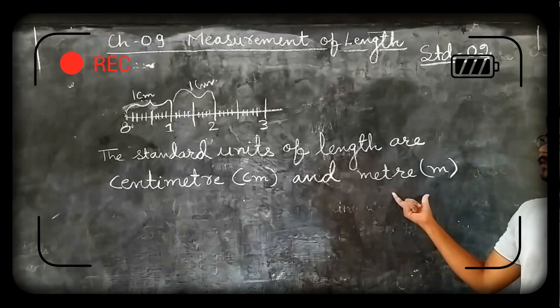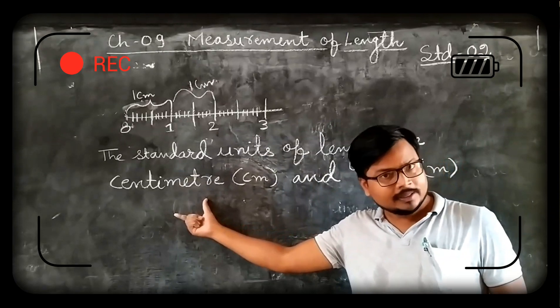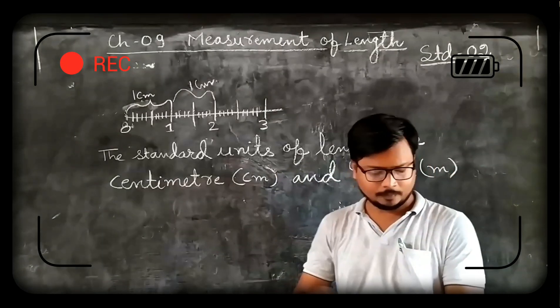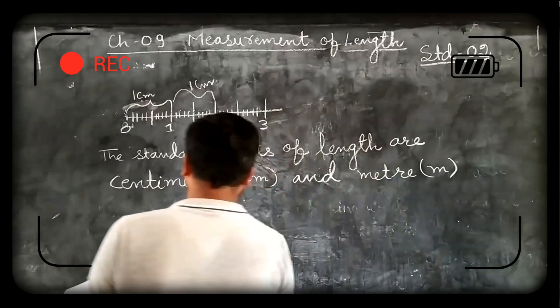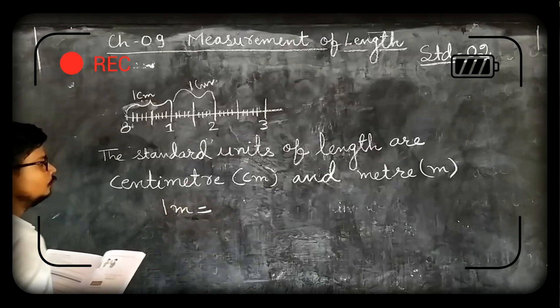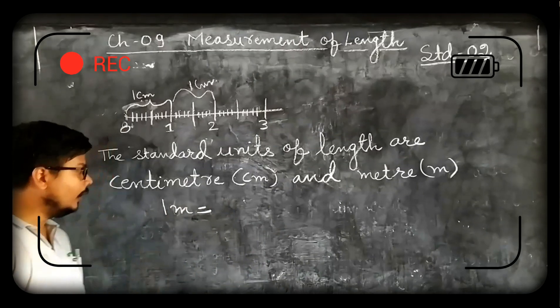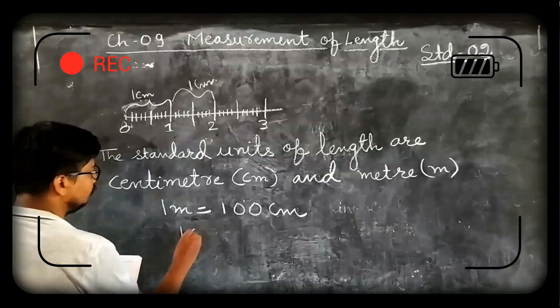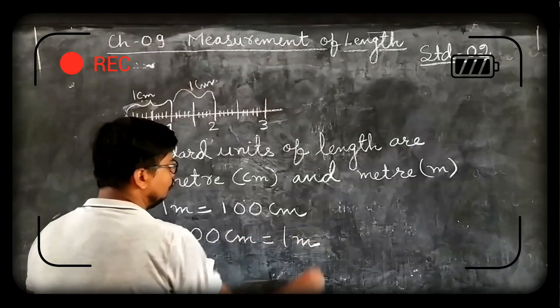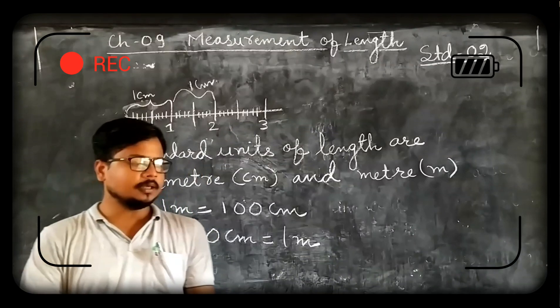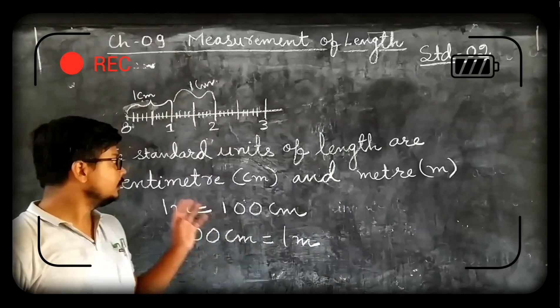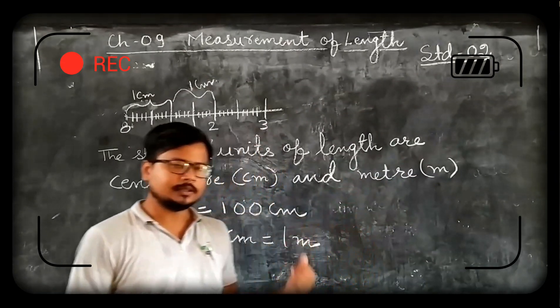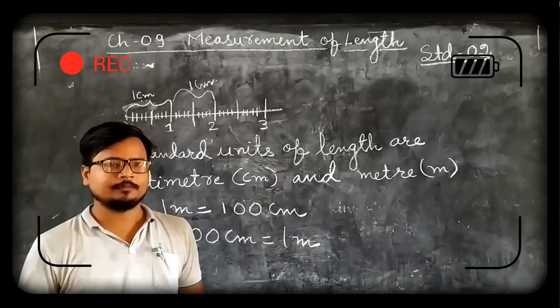Now come about meter. As I have told you, this is used for measuring small lengths and this is used for measuring bigger lengths. If suppose the question is asked: 1 meter equals to how much? Then you can say 1 meter equals to 100 cm, or you can also write 100 cm equals to 1 meter. These are the standard units of length: centimeter (cm) and meter (m). By using these standard units you can measure the length of any object.